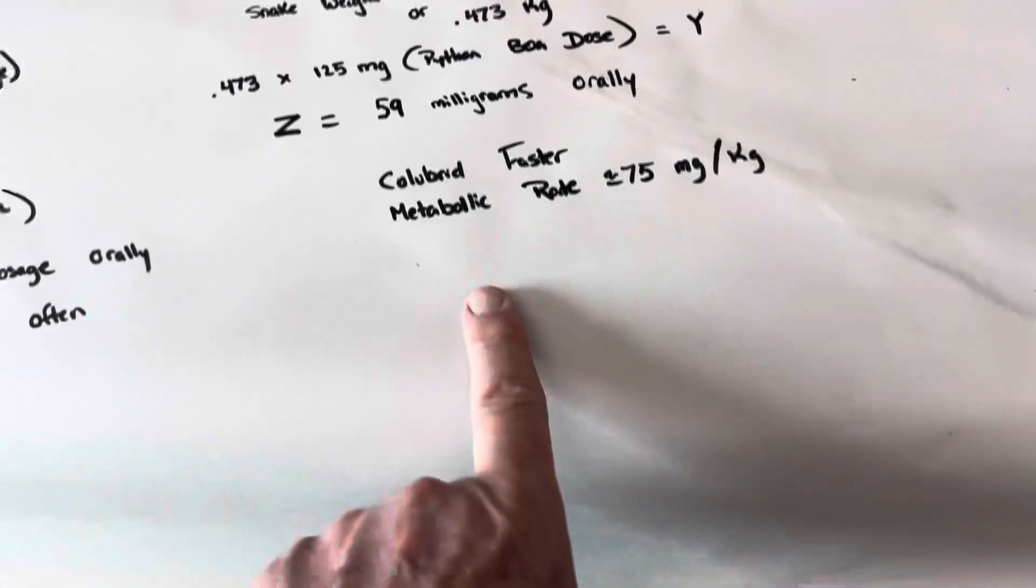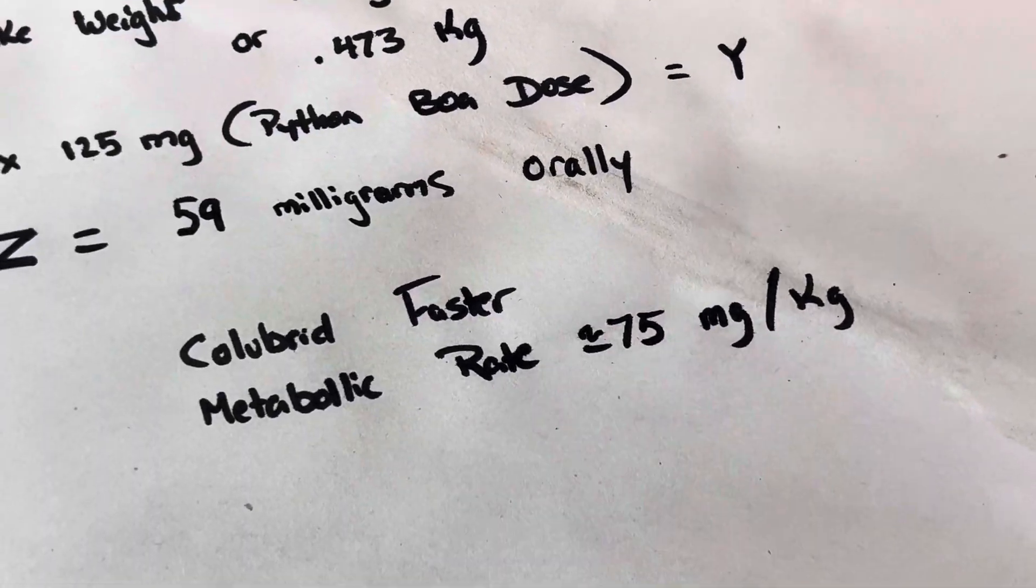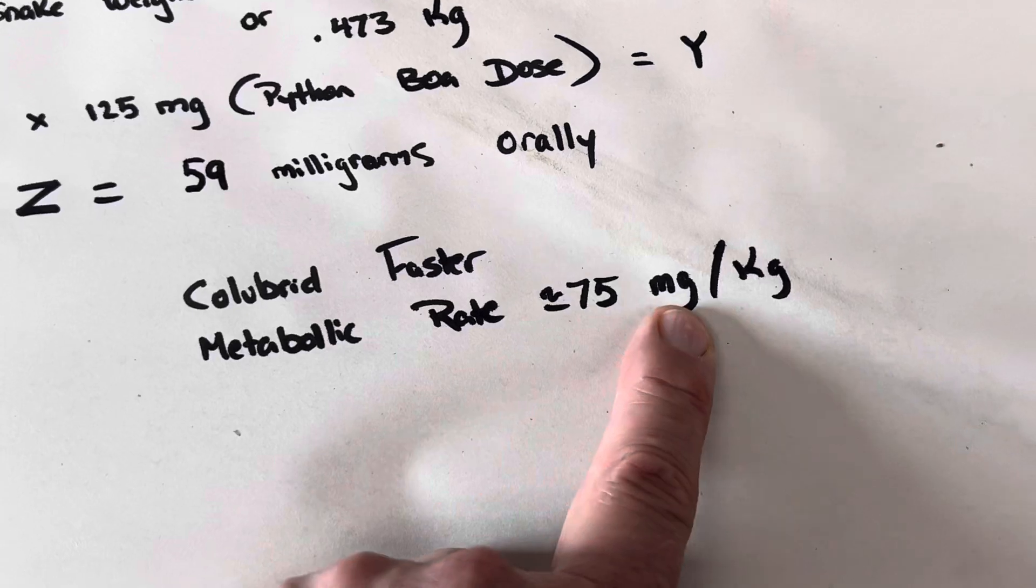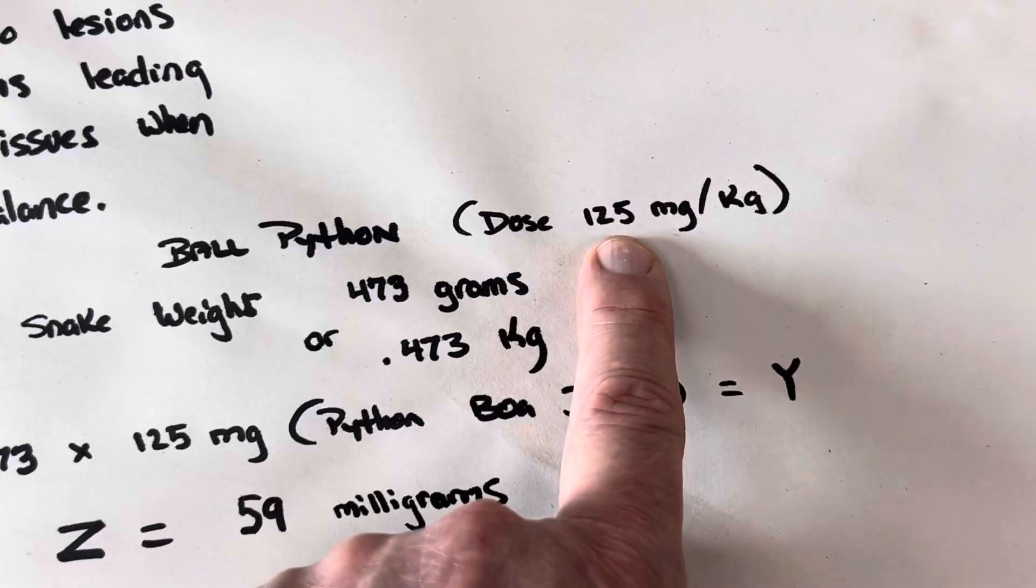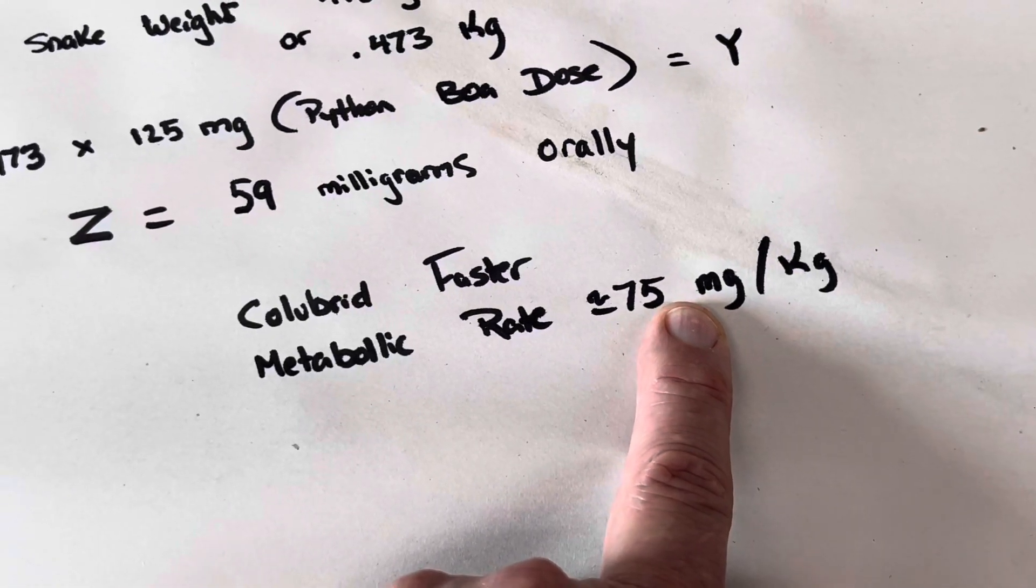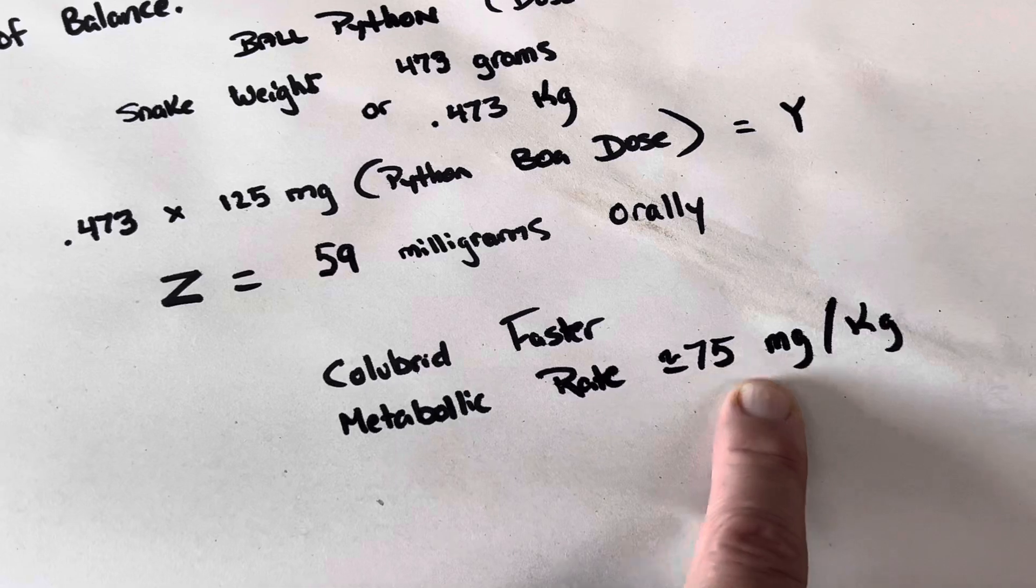If we were doing a colubrid, so we're doing a king snake or corn snake that is throwing up everything, we're going to do a smaller dosage, which is only 75 milligram versus the 125 for python or boa because they have a faster metabolism and things happen way quicker. And we do not want to poison the animal.